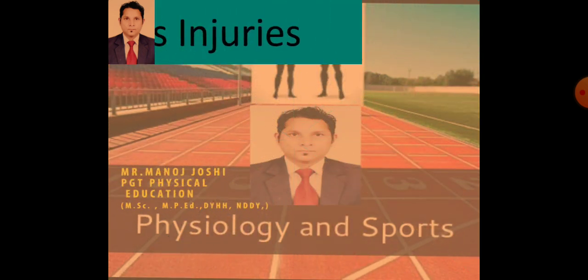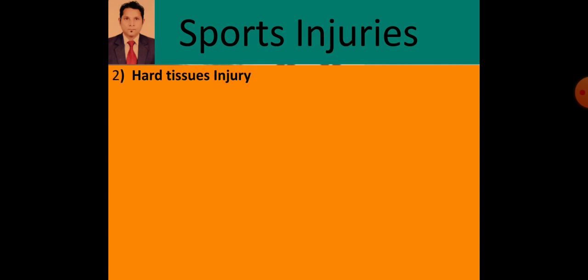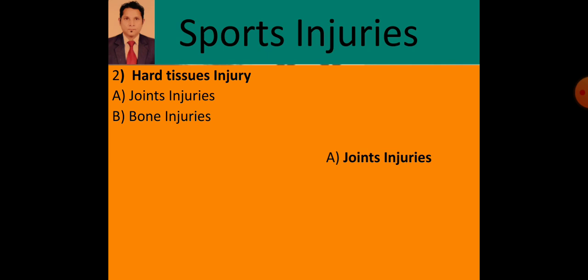Hard tissue injuries are those where hard tissues are getting injured. Soft tissue injuries included skin injuries — abrasion, laceration, contusion, and incision — and muscle injuries like sprain and strain, making six soft tissue injuries in total. Hard tissue injuries involve joint injuries and bone injuries.